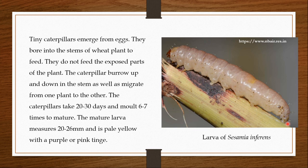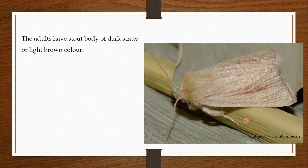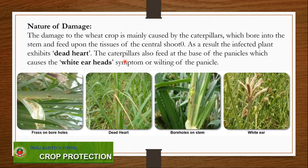When the larva matures it will pupate. The pupa is of the obtect type, meaning it secretes a substance all over its body which hardens and glues all the appendages to the body. The pupa is generally found inside the stem tissue but can also be found outside the plant. The adults have a stout body and are dark straw or light brown in colour.